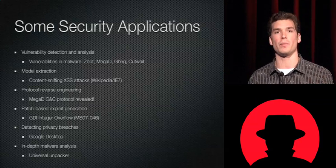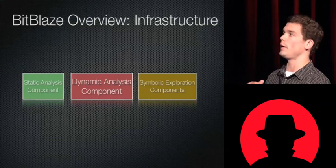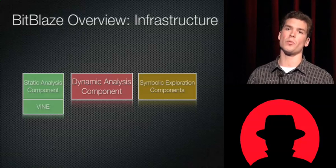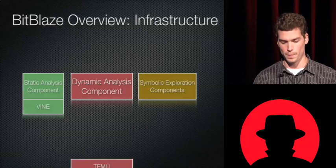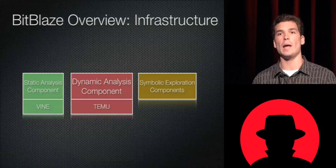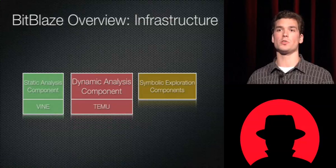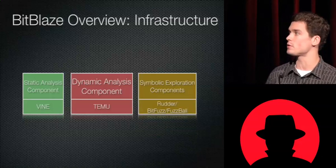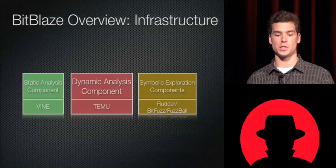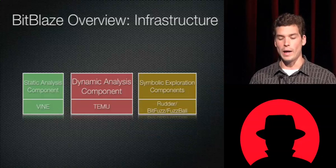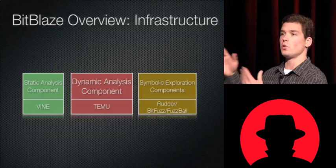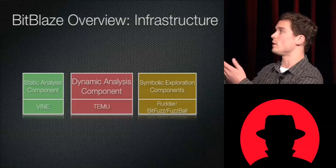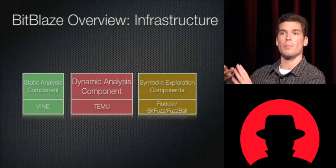Next I want to talk about how we actually enable these kinds of applications. BitBlaze is split up into three core components. The first is a static analysis component called Vine, which lets us do static analysis and symbolic execution and provides core utilities for common types of analysis. The dynamic analysis component lets us run a program in an emulated environment and perform very fine-grained binary instrumentation, extract semantic information from the OS and program, and perform dynamic taint analysis. Finally, we have the symbolic execution components — currently there are three: Rudder, BitFuzz, and Fuzzball. These use functionalities provided by Vine and TEMU to enable symbolic exploration, generating symbolic predicates that inputs have to satisfy to follow a given execution path.